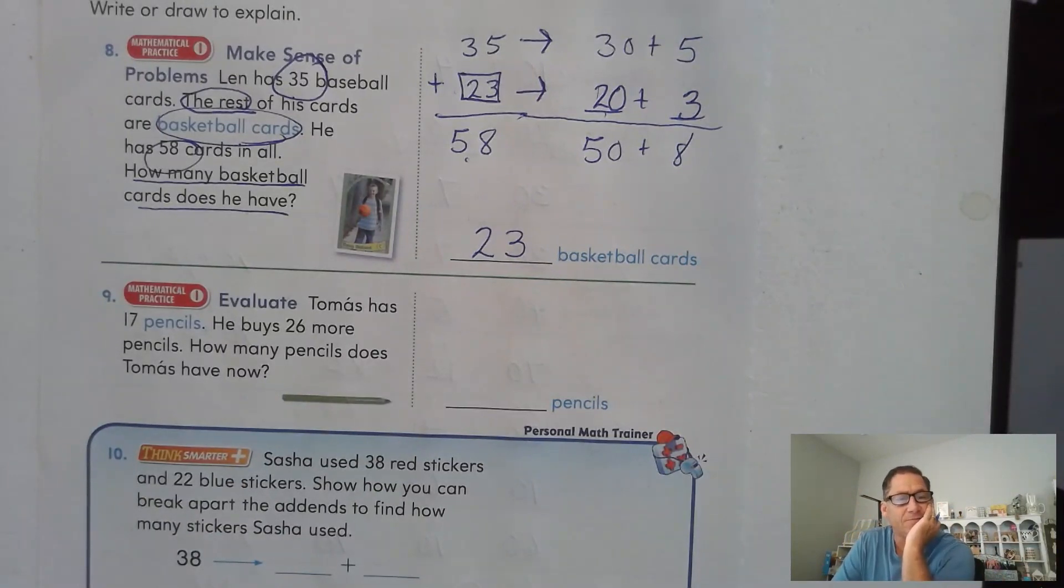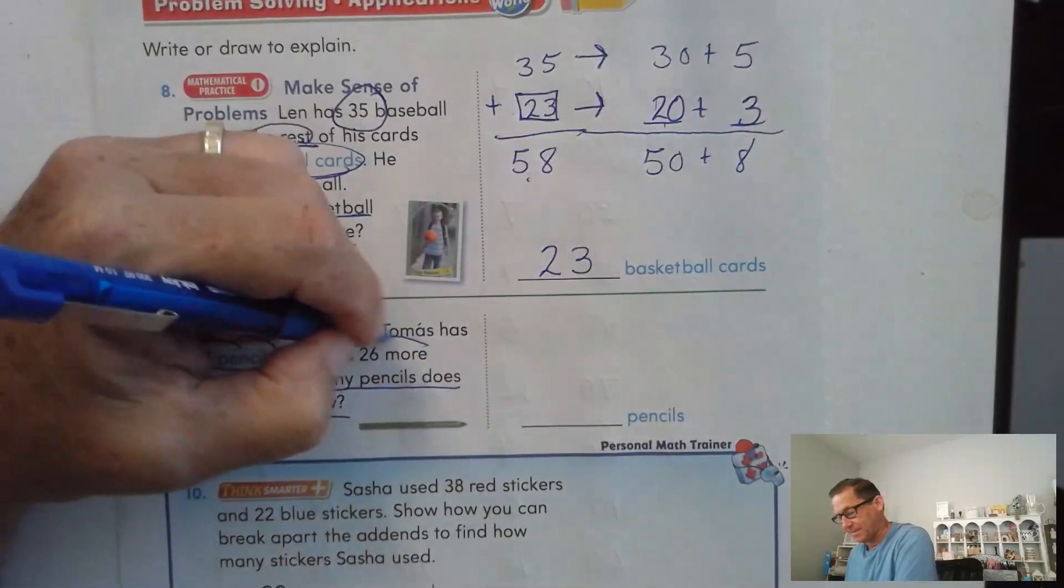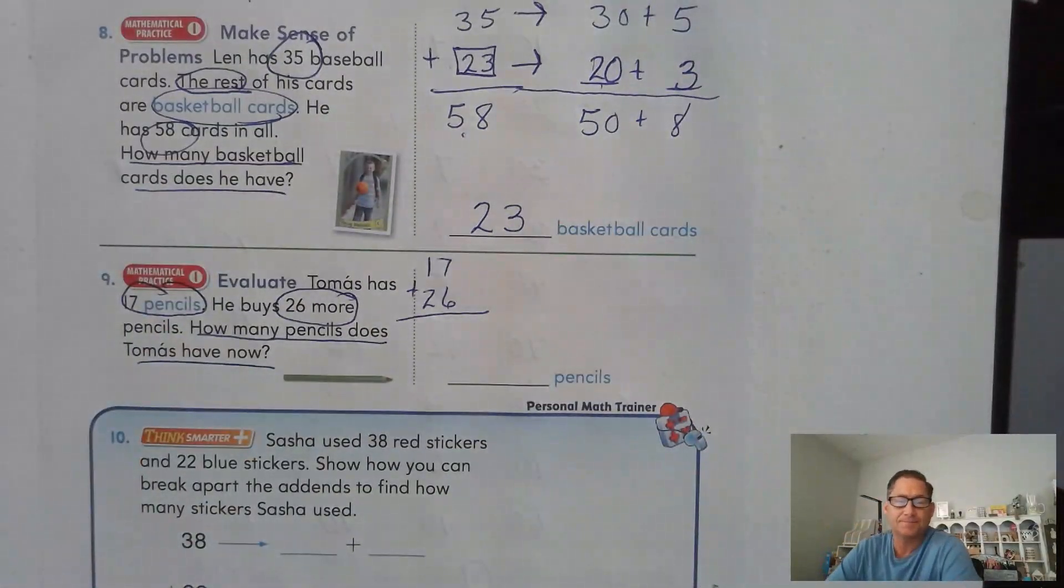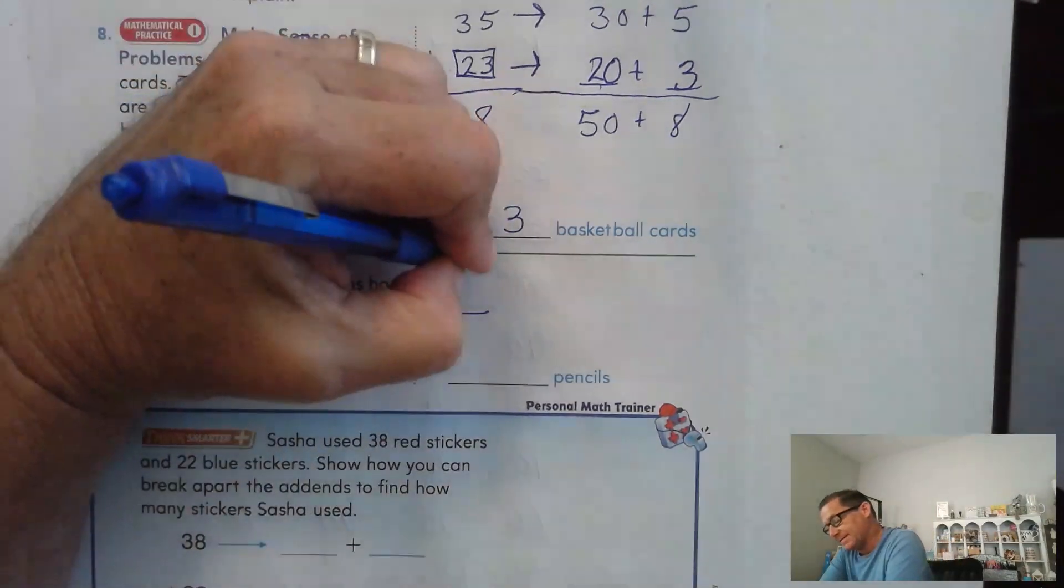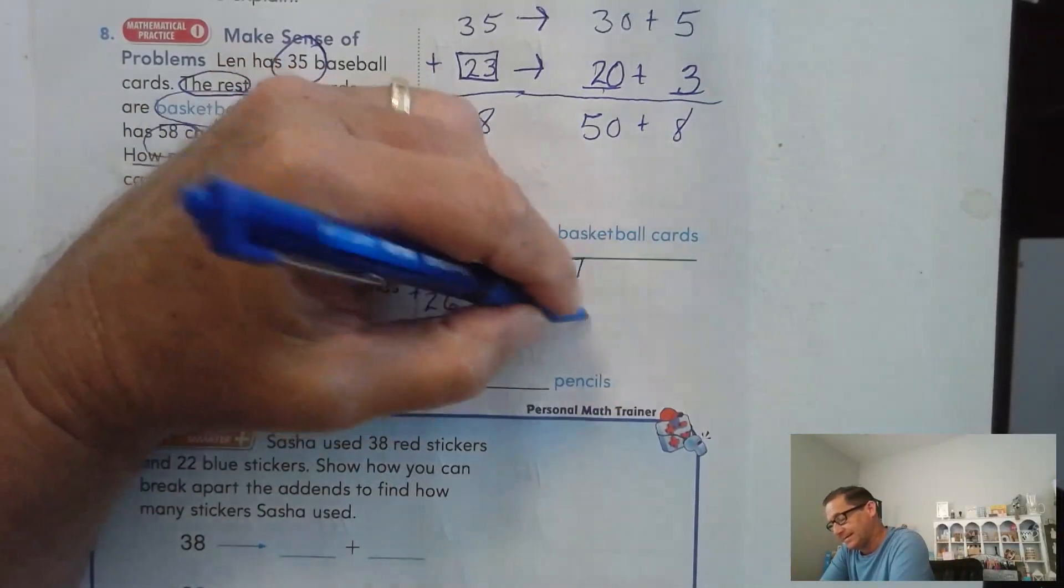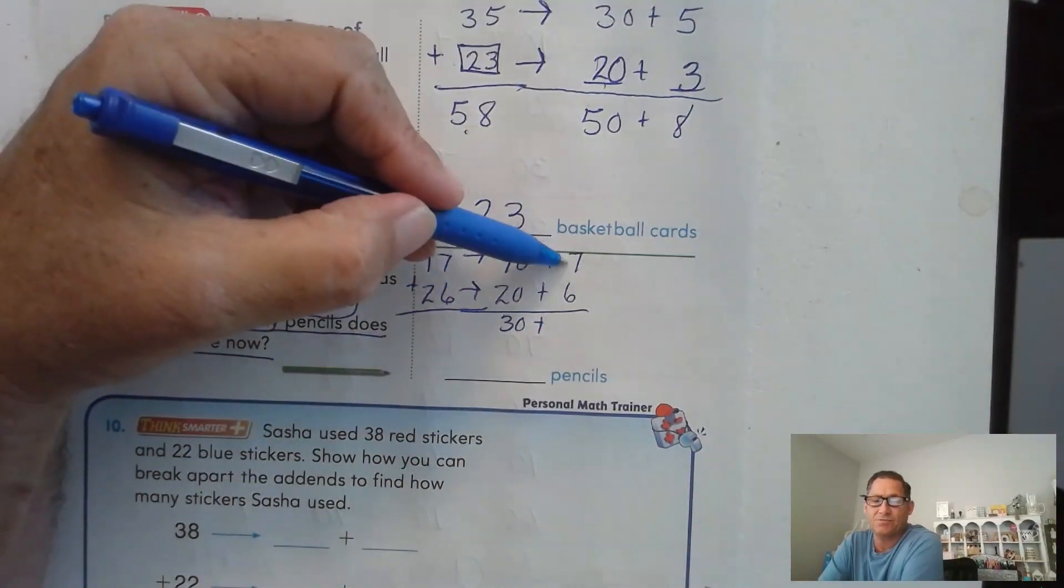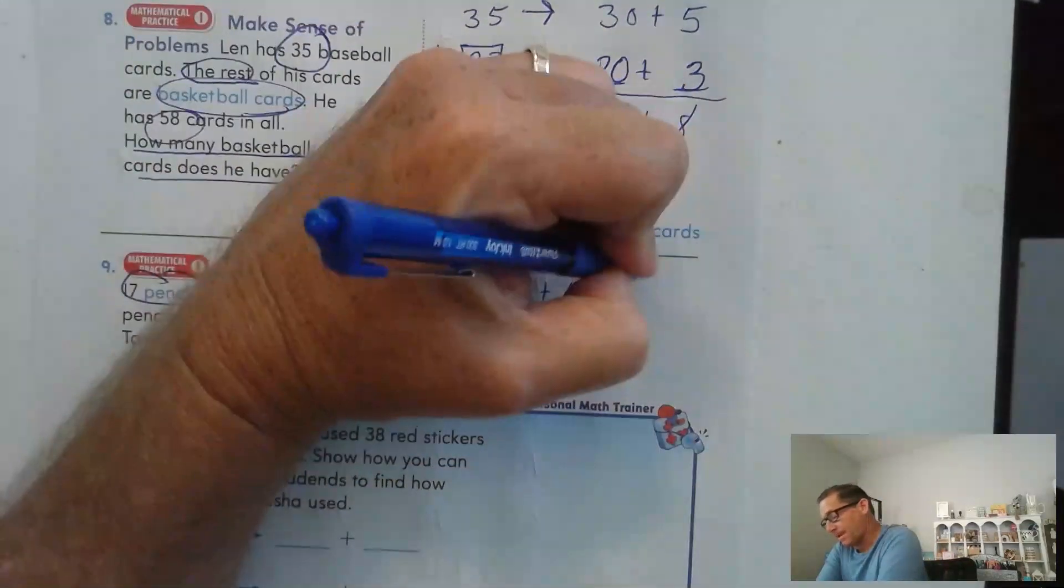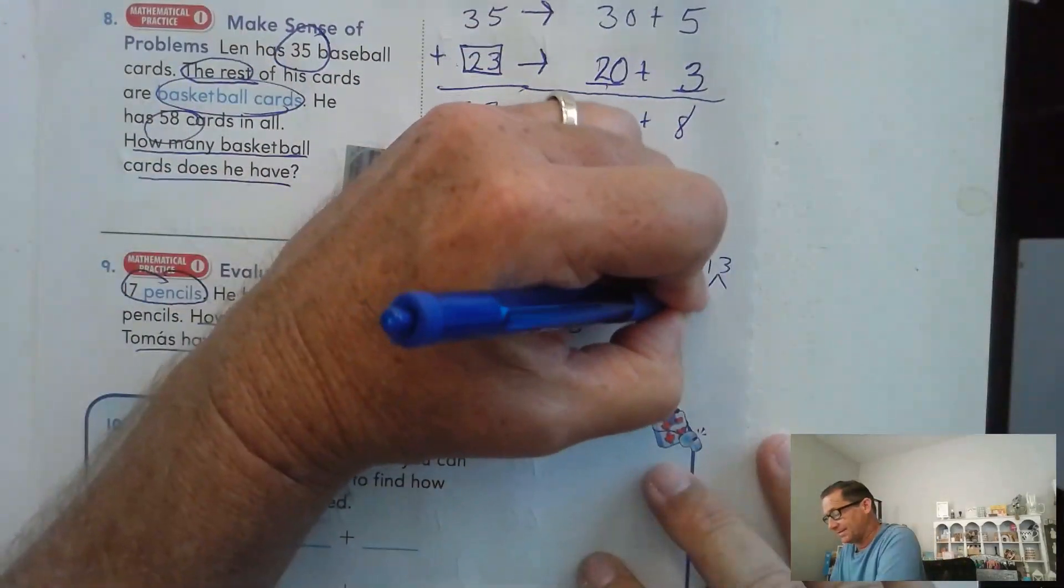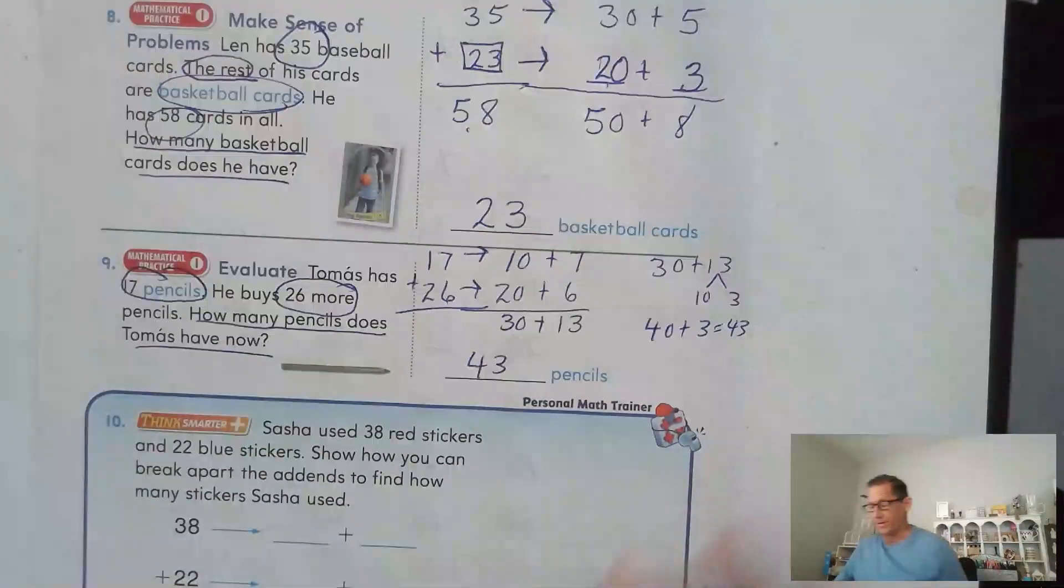Number 9. Tomas has 17 pencils. He buys 26 more pencils. How many pencils does Tomas have now? He had 17 and he buys 26 more. 17 plus 26. Break apart 17 into 10 plus 7. Break apart 26 into 20 plus 6. Well, 20 plus 10 is 30. And 7 plus 6. Well, I think of that as 6 plus 6 is 12 plus 1 more is 13. And I can think of 30 plus 13 as 30 plus 10 plus 3. So 40 plus 3. That's 43 pencils.